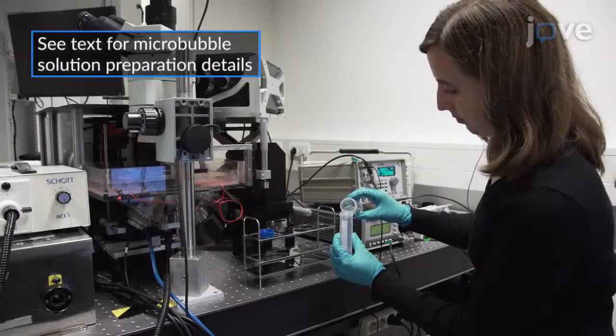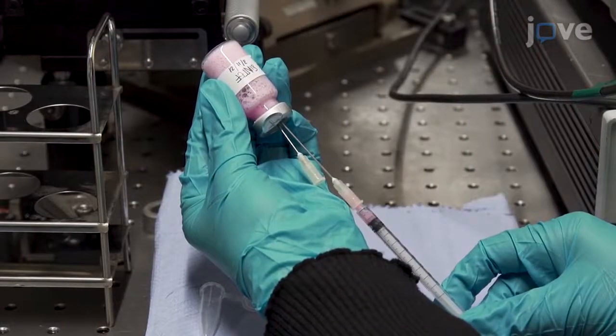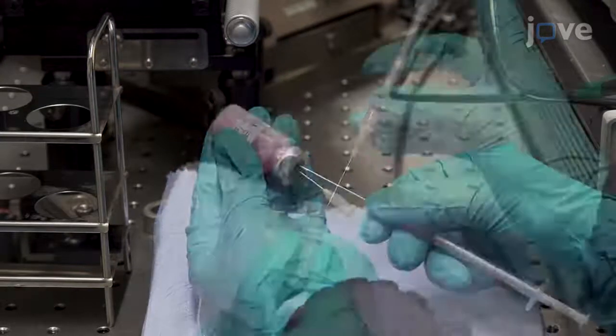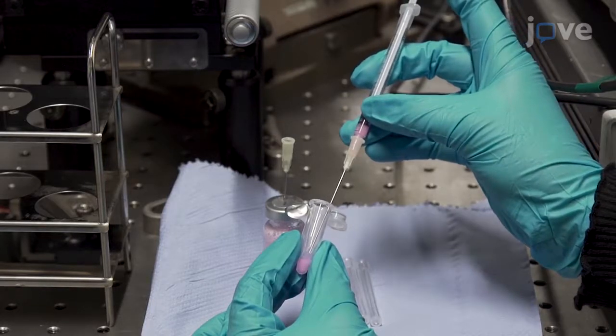For single-bubble imaging by Brightfield Microscopy, place a 19-gauge venting needle and use a 1-milliliter syringe equipped with a 19-gauge needle to remove a small amount of microbubble suspension from the glass vial into a small tube for easier pipetting.